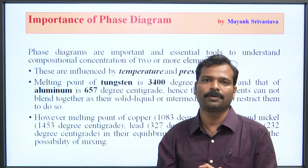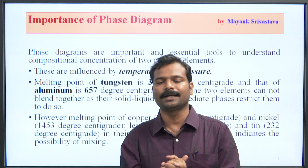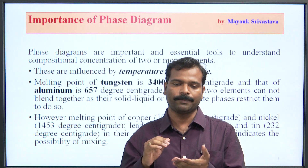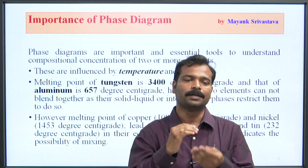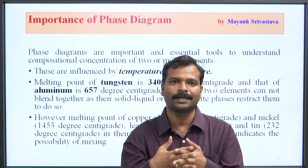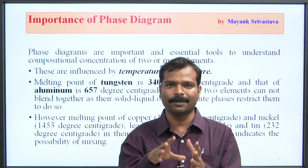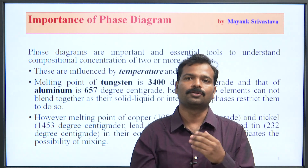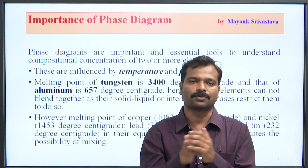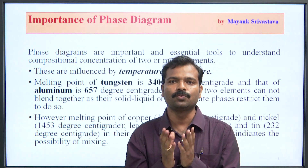Now the melting point of Tungsten is 3400 degrees centigrade, and Aluminium is 657 degrees centigrade. This means that you have two materials — one Aluminium and one Tungsten. Now you have to heat it, so when the temperature is 657, then the Aluminium melts, but the Tungsten does not melt. If you don't melt together, then you will not find a blend. So this is why it is necessary to understand the melting point. The melting point of Tungsten is 3400 degrees centigrade and that of Aluminium is 657 degrees centigrade. Hence two elements cannot blend together.